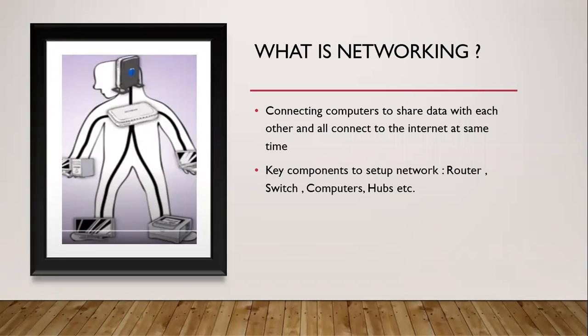So basically what is networking? Networking is like connecting computers to share data with each other and all connect to the internet at the same time. The key components which we use in networking are hub, router and switches. Router is the brain of the network, so you can relate this with the human body where all the things are the body parts, and we can consider all these things as the parts of the network.